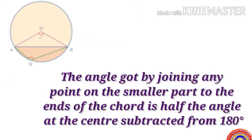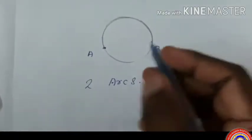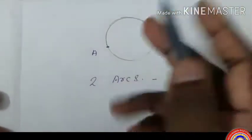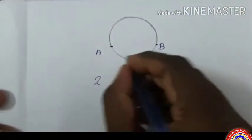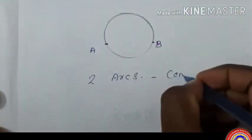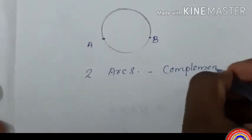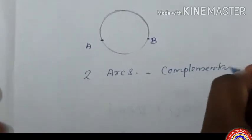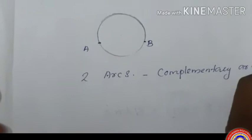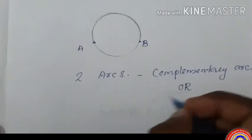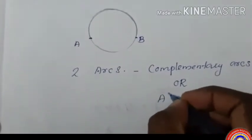We have talked about the central angles of an arc in class 9. We can put the above result in terms of this idea. Here A and B are any two points on a circle, dividing it into two arcs. Each of these arcs can be called the complementary arc or alternate arc of the other.